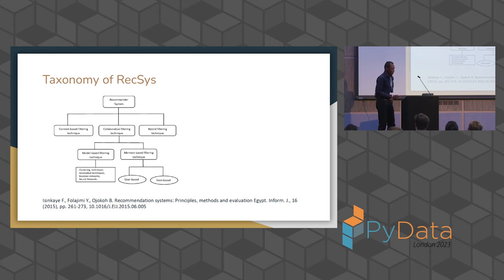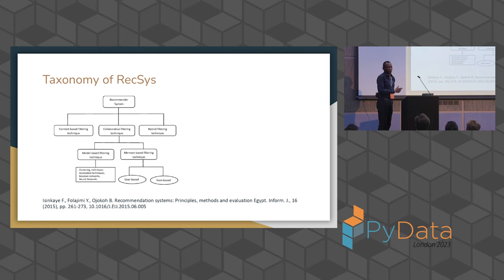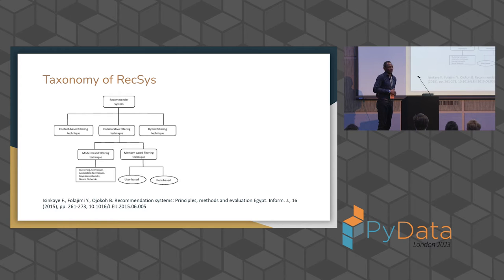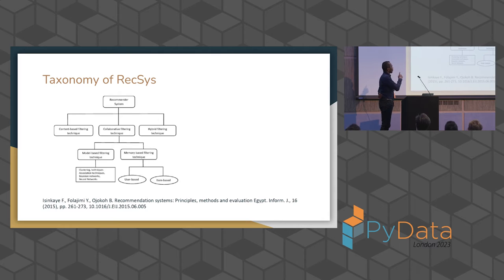Generally there are two types of recommendation systems: collaborative filtering and content-based filtering, and in some cases a hybrid of the two. Collaborative filtering is also divided into model-based and memory-based. Memory-based leverages K-nearest neighborhood attributes of either the item or the user. The two key components of recommendation systems are items and users. I'm going to be focusing on model-based approaches.